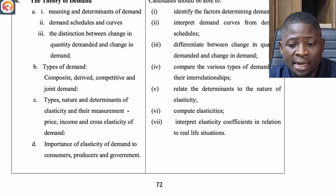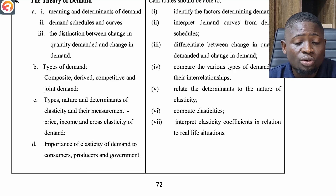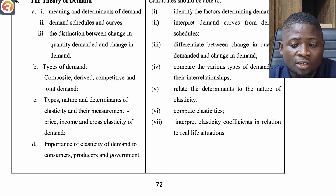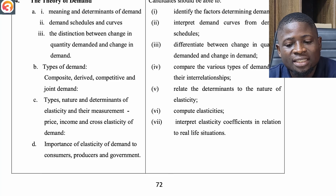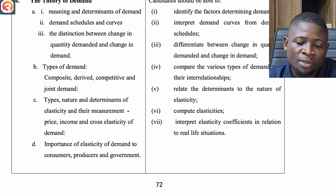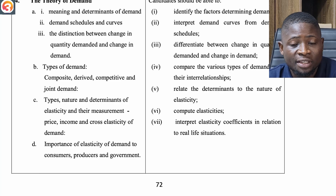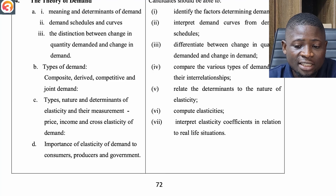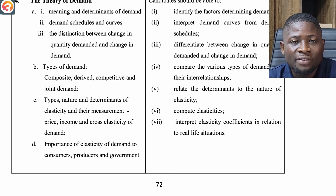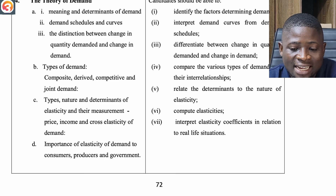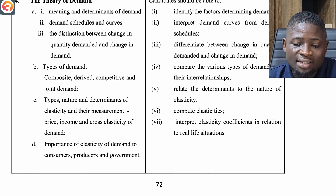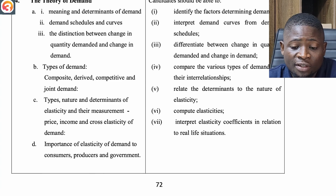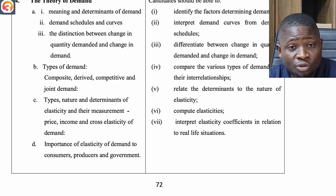The fourth topic is the Theory of Demand. Under this, look at the meaning and determinants of demand, demand schedules and curves, the distinction between change in quantity demanded and change in demand, types of demand — composite, derived, competitive and joint demand — and the types, nature and determinants of elasticity with their measurement: price, income and cross elasticity of demand, and the importance of elasticity of demand.